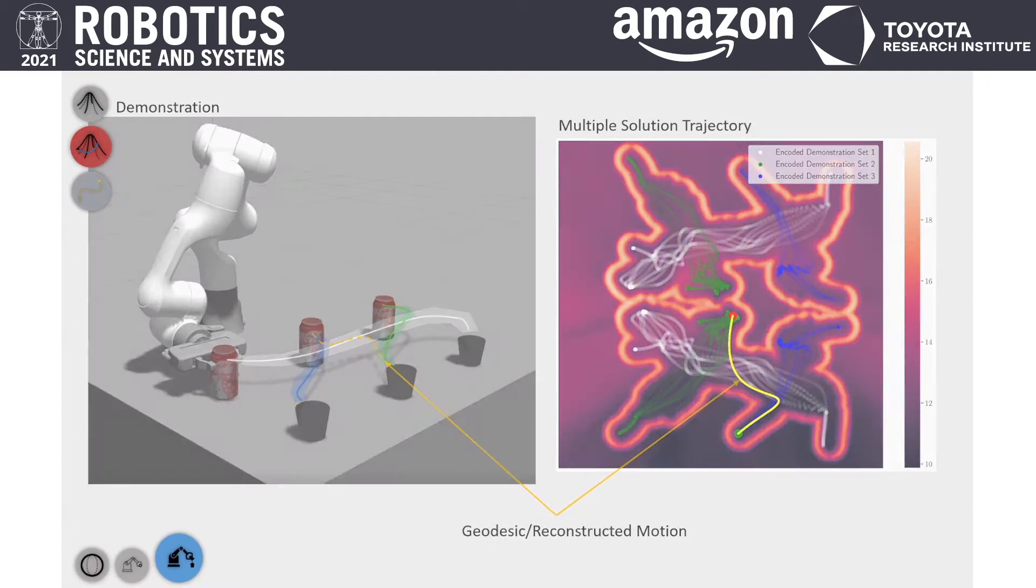And finally in this video you can see the robot is able to do the pouring task and avoid the obstacles at the same time.